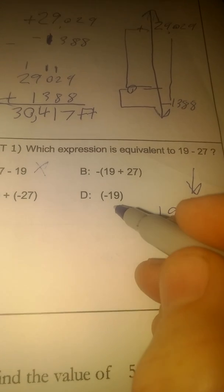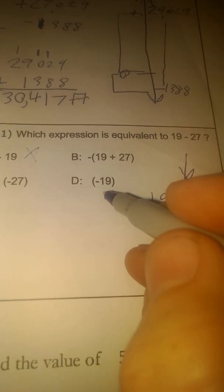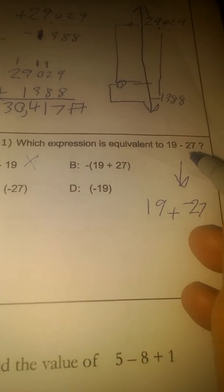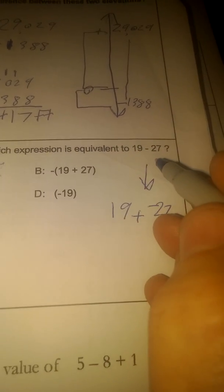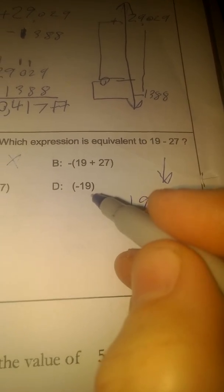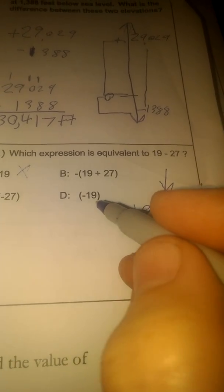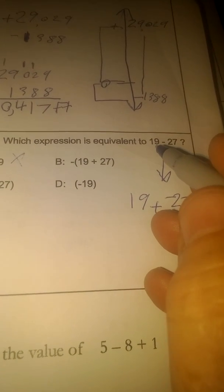Negative 19 just doesn't make any sense. What does that have to do with subtracting 27 from 19? We'd have to subtract 38 from 19 to get to negative 19, because 38 is twice 19.